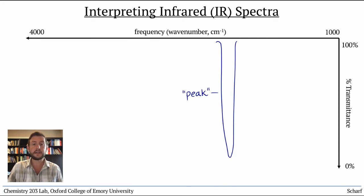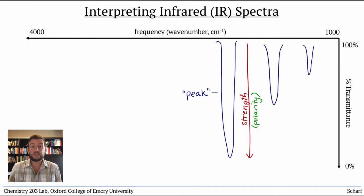Each peak is characterized by two features. How far down the peak goes is called its strength, and it reflects the efficiency with which a particular bond absorbs photons. It very roughly correlates with the polarity of the bond. More polar bonds tend to give stronger peaks in the IR spectrum. Peaks are generally called either strong, medium, or weak.